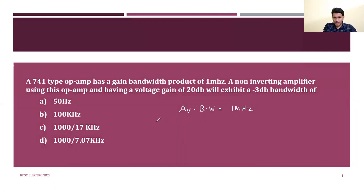We need to convert 20 dB to a linear voltage gain. The gain in dB is 20 log AV, which equals 20 dB.